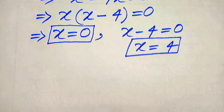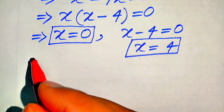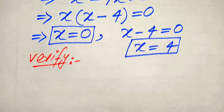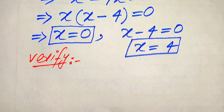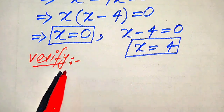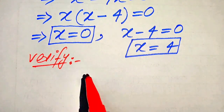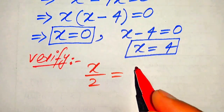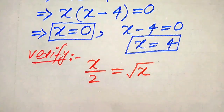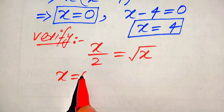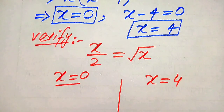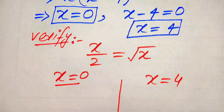In the next step we need to verify these two roots and check whether they satisfy our given equation. Because our given equation is a radical equation, there is a possibility of getting extraneous roots, so verification is necessary. We copy down the given equation: x over 2 equals the square root of x. We verify x equals 0 and x equals 4.